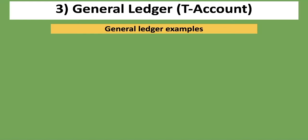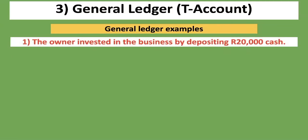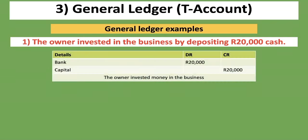When we're doing the general ledger or T-account, we take each account and open a ledger for it. Here's the first example: the owner invested in the business by depositing 20,000 rand. We identified two accounts — bank, because money was coming into the bank, and capital. That's why we debited bank and credited capital with 20,000 rand in the general journal. Now, if asked to do the general ledger for this transaction, we open a T-account for the bank account.